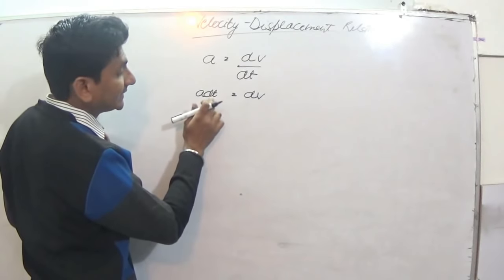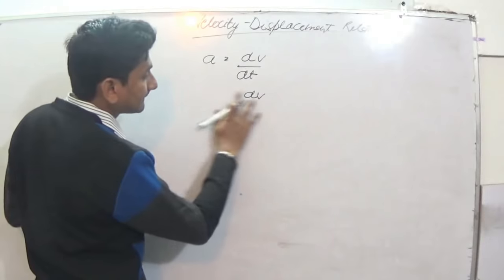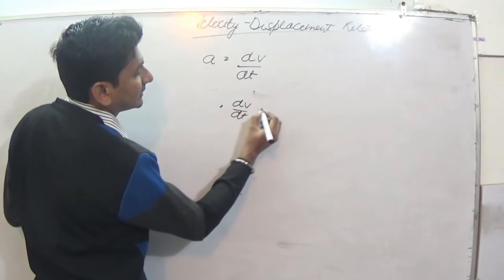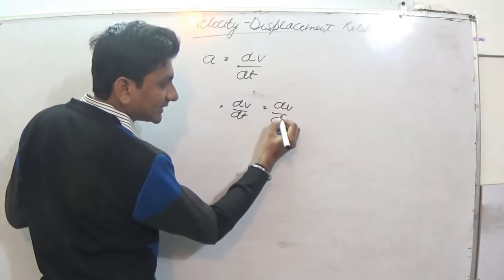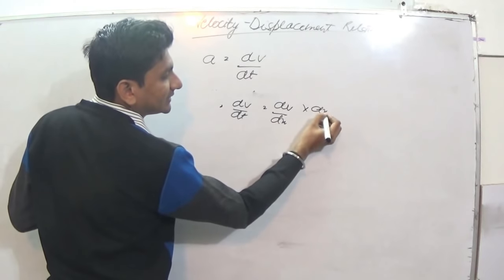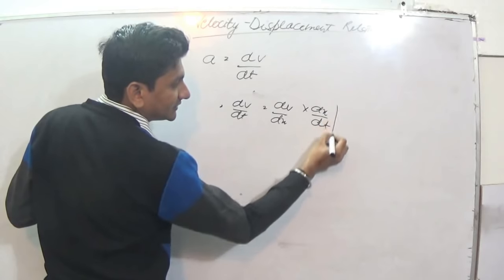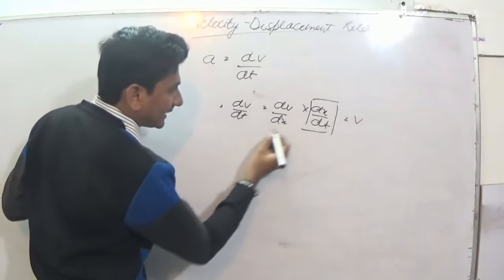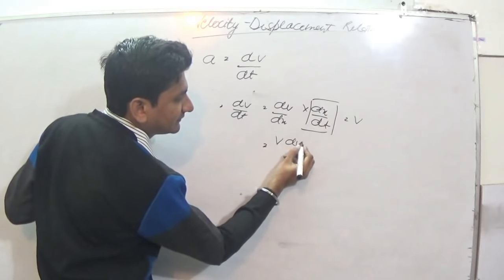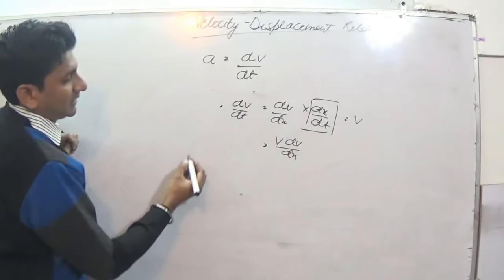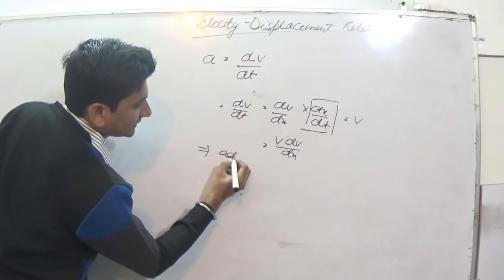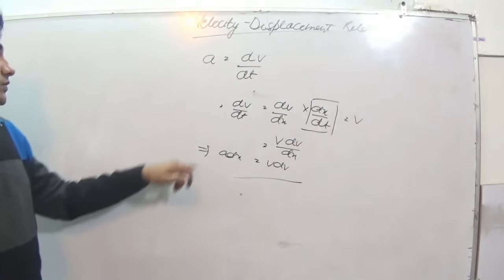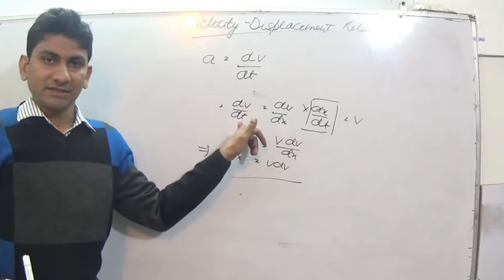But we want to find out distance between velocity and displacement, so we will try to eliminate this one, dt. How can we do that? We can write dv by dt is equal to dv by dx multiplied by dx by dt. This is equal to dv, this is equal to v. And it becomes vdv upon dx, implies adx is equal to vdv.